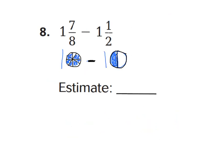Let's go ahead and look at number eight. I went ahead and drew the model for you to show one whole and seven-eighths shaded in, and one-and-a-half shaded in. We can see that seven-eighths is almost shaded in to be one whole, because only one-eighth still needs to be shaded in. So I'm going to estimate seven-eighths to be about one whole. One whole plus one whole is two wholes, so I'm just going to call this two. Now let's do one-and-a-half — it's already done for you. So two wholes minus one-and-a-half.